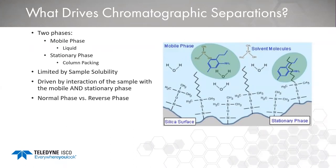These principles apply whether we're doing normal phase or reverse phase. In normal phase, we have bare silica — it's not functionalized, so it's a more polar surface — and we use a non-polar solvent to start, with increasing polarity to drive compounds off the column. In reverse phase, the silica surface is functionalized with long chains, typically C18, making the surface more non-polar. We start with high aqueous content and introduce an organic modifier such as acetonitrile or methanol to drive the compound down the column.